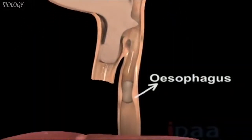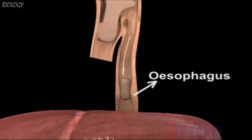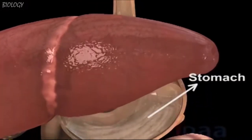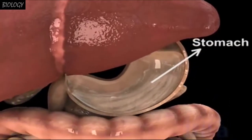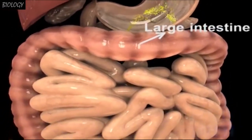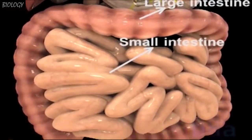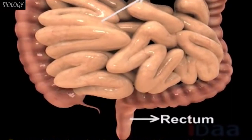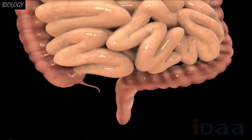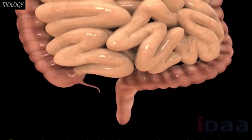esophagus, stomach, large intestine, small intestine, rectum, and anus. The food gets digested gradually as it passes through the various parts of the tract.